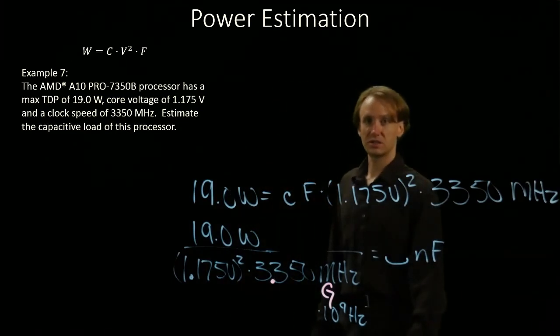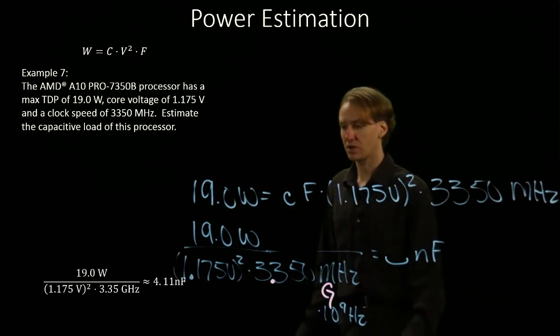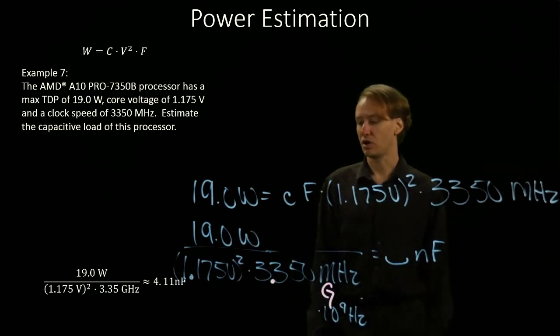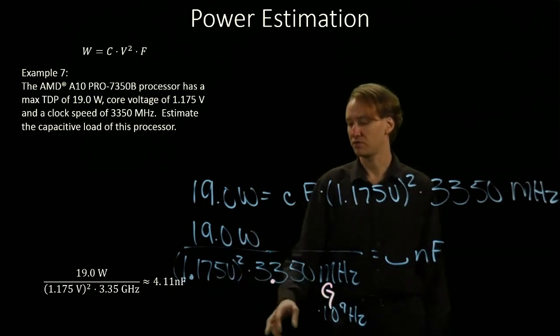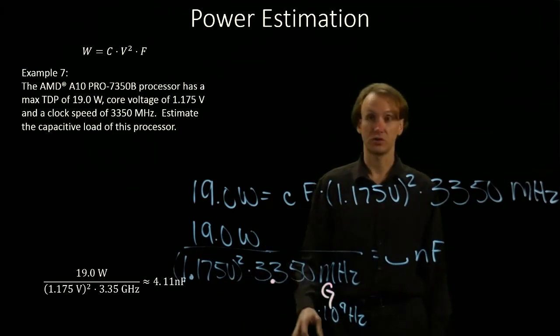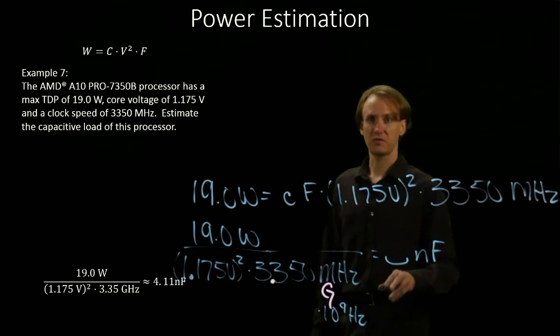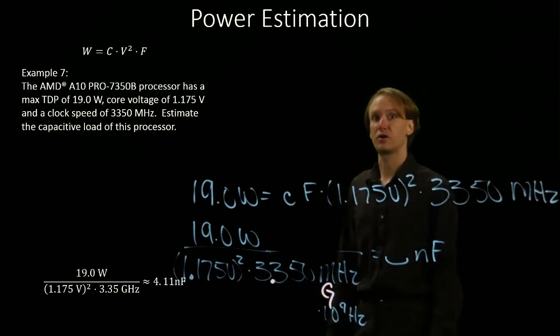So when I stick this into the calculator, run this through, I get my 19 watts divided by 1.75 squared times 3.35 gigahertz. Gives me about 4.11 nanofarads.